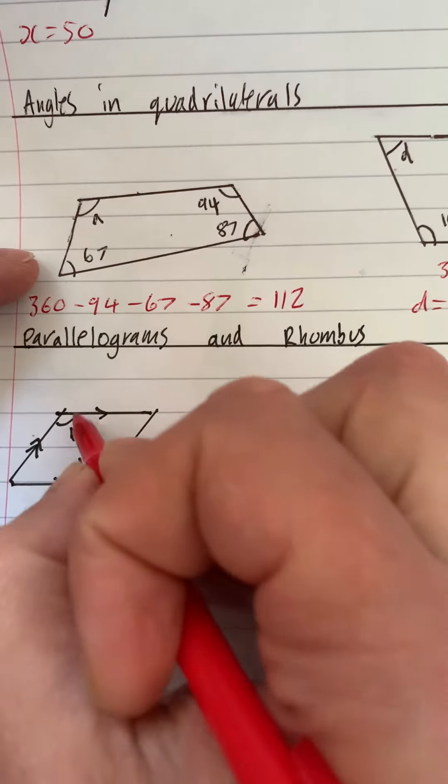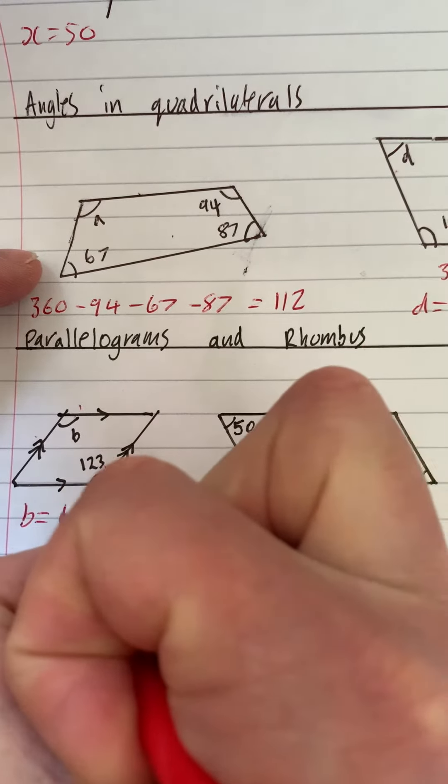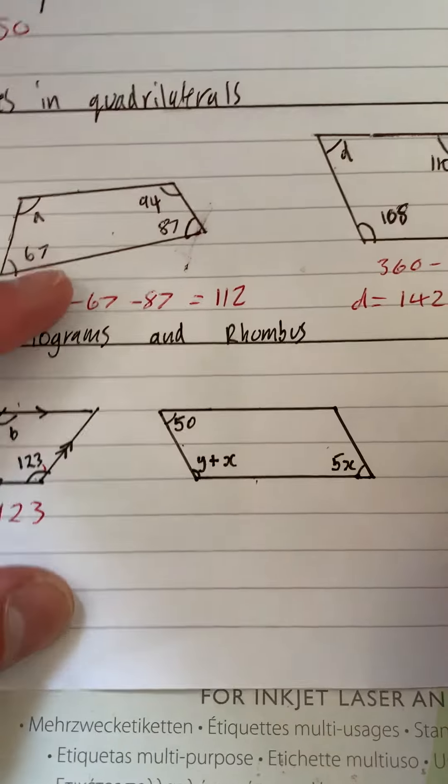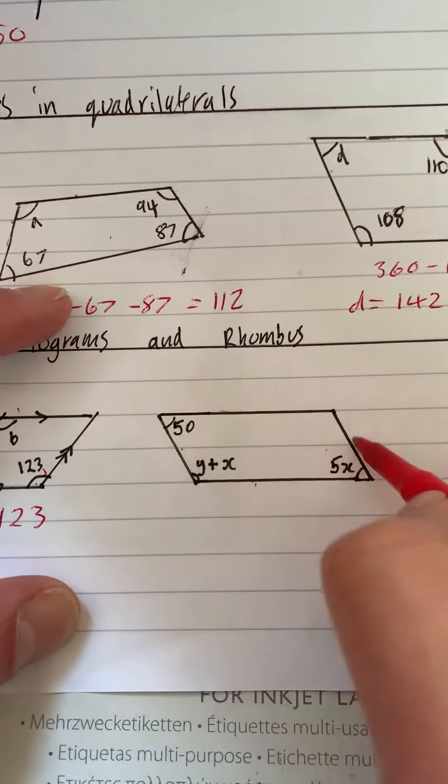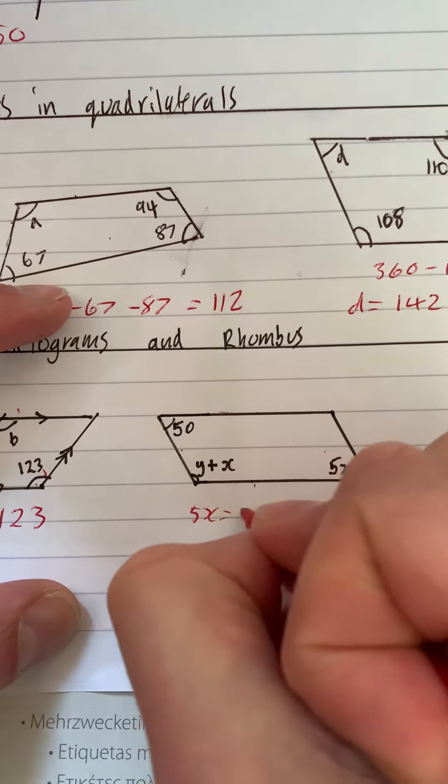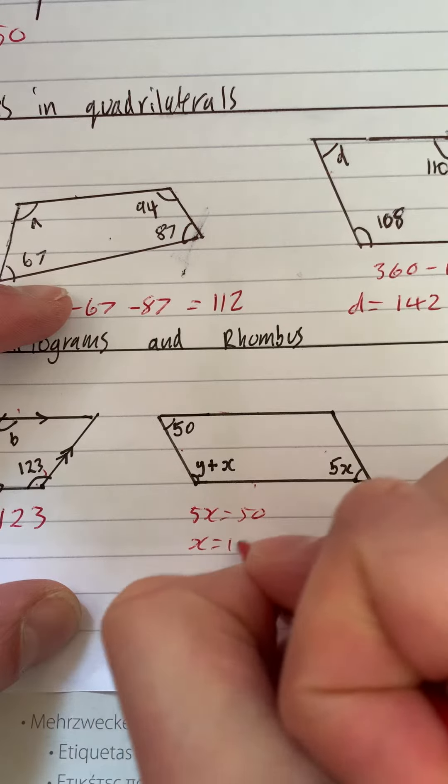Now the opposite angles are equal, so B would equal 123. These opposite two angles would be equal, so if 5x is equal to 50, x is equal to 10.